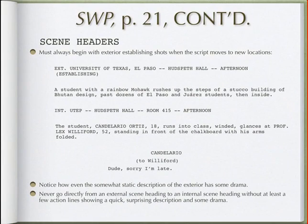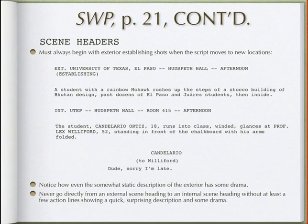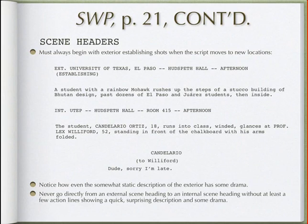Every time you move to a new place or time in your script, you need to write a new scene heading, also called a slug line. If a character argues with another from a bedroom into the hallway and then into the kitchen, for example, you should have at least one scene heading for each room — a minimum of three.